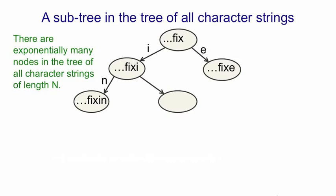There's exponentially many nodes in the tree of all character strings of length N. So this is going to be a very big tree. We couldn't possibly store it all. If we could store it all, what we'd like to do is put a probability on each of those arrows. And that would be the probability of producing that letter given the context of the node.